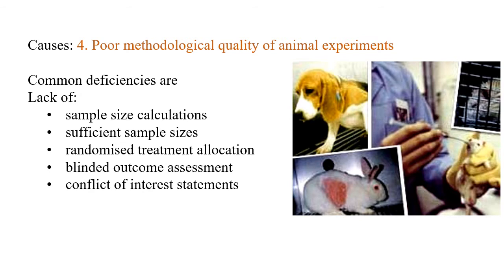Poor methodological quality of animal experiments includes issues with sample size calculation, sufficient sample size, randomized treatment allocation, blinded outcome assessment, and conflict of interest statements. Researchers study various parameters and assess whether the animal is producing the required property, but this approach may give poor validity.